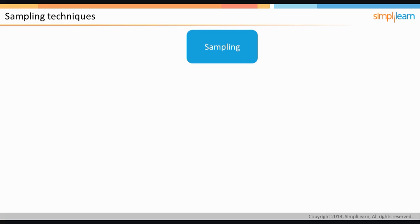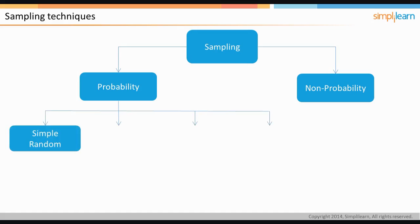Sampling is broadly classified into probability and non-probability sampling. Let's look at different probability sampling techniques. First, we have simple random sampling. It's the purest form of sampling technique, where every element has equal opportunity of participation. All the elements are selected independent of each other.